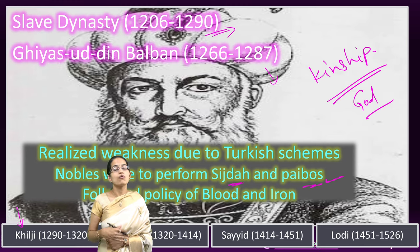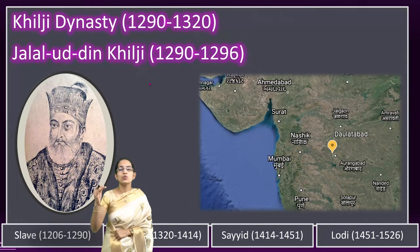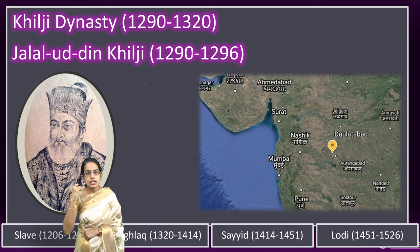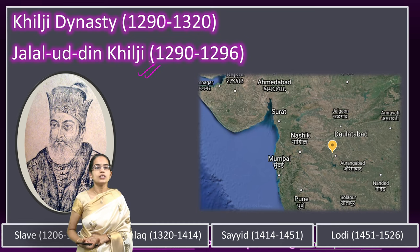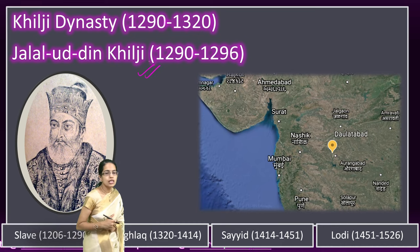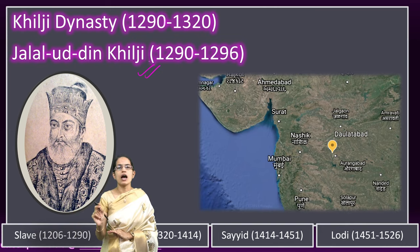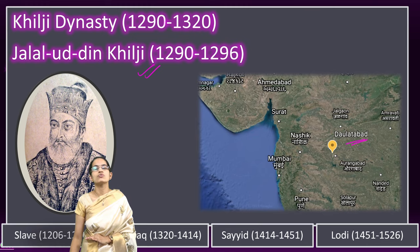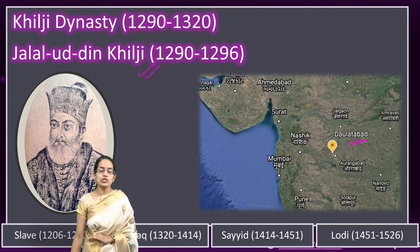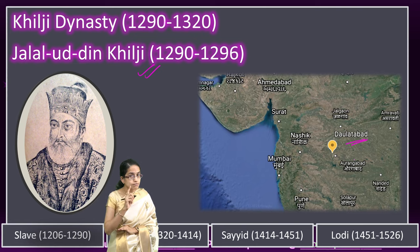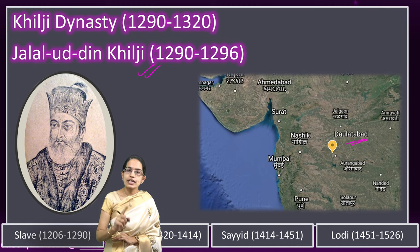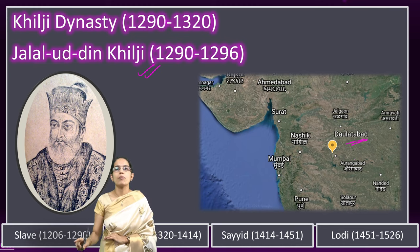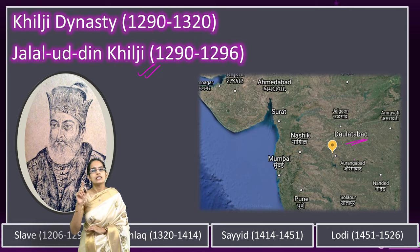After the Slave dynasty, the next dynasty to rise to power was the Khilji dynasty — the second in order of the Delhi Sultanate — with founder Jalaluddin Khilji. Jalaluddin Khilji was in power for six years, and his major development was the raid over Devagiri, also known as Daulatabad, in present-day Maharashtra. This raid was conducted not by Jalaluddin himself but by his nephew and son-in-law, Alauddin Khilji.